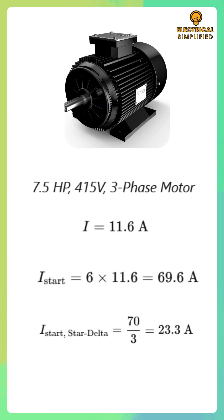To summarize, a 7.5 horsepower, 415 volt, three-phase motor draws about 11.6 amps at full load, around 70 amps when started direct online, and approximately 23 amps when started through a star delta starter.